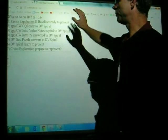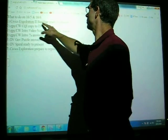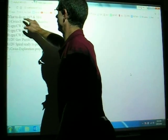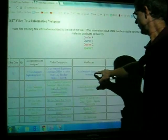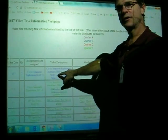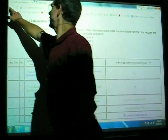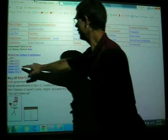This is the to-do list. Put this in box number one: Civics Exploration II baseline ready to present. What you're going to find is go to history, go to video task, Civics Exploration II, watch the step one and two baseline and get that done. That might take you today, that's fine if it does. So that is your first thing you need to do.